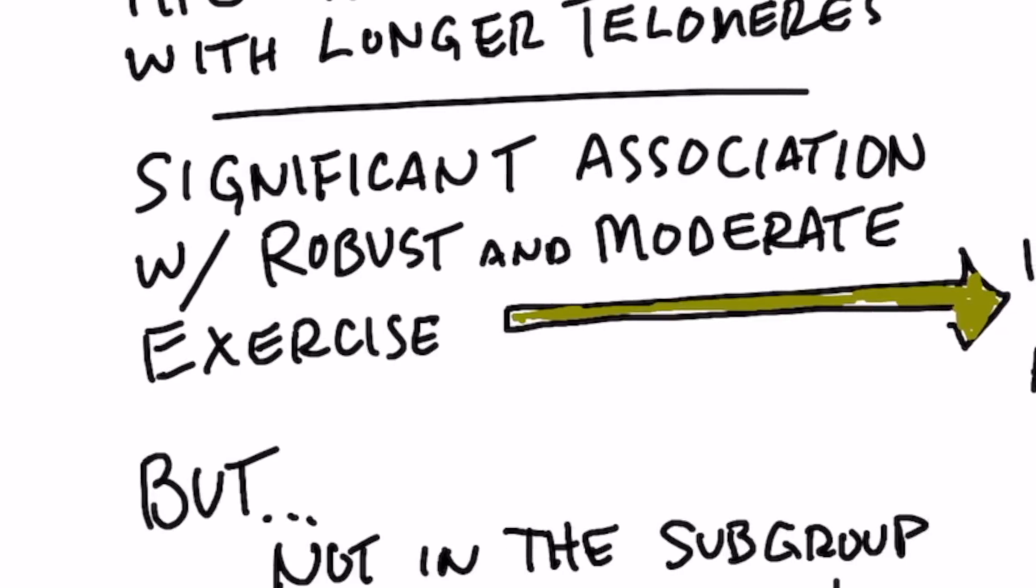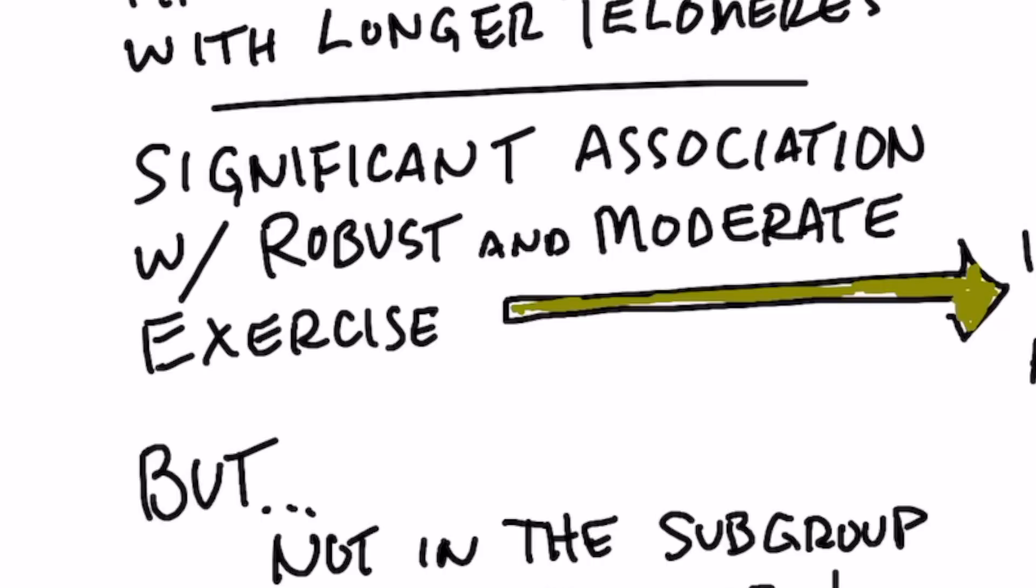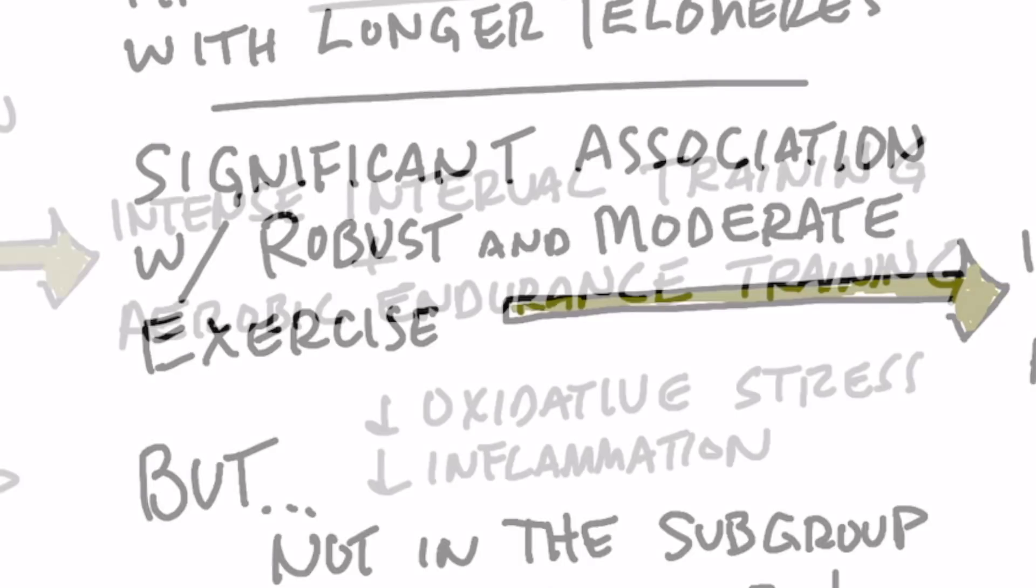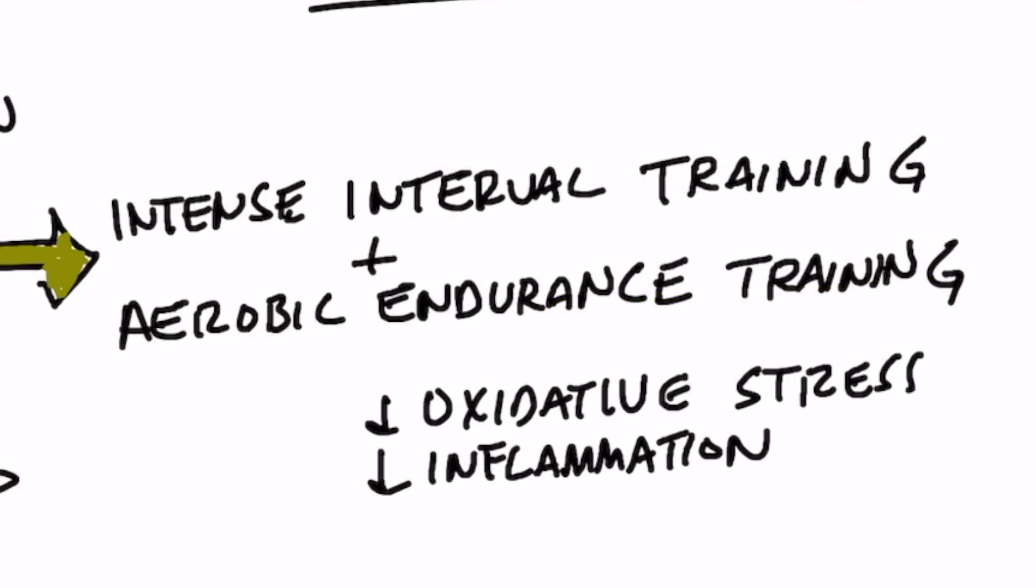The next point is this: there was a significant association with robust and moderate exercise. I'm mainly talking about high intensity interval training - that's a very intense workout but a short duration - and aerobic endurance training.